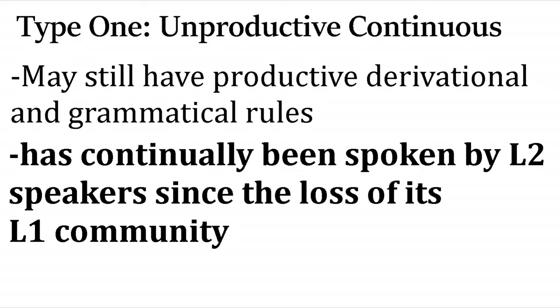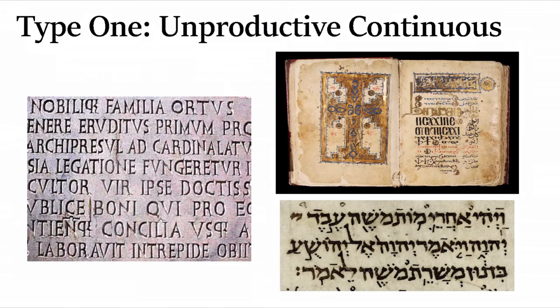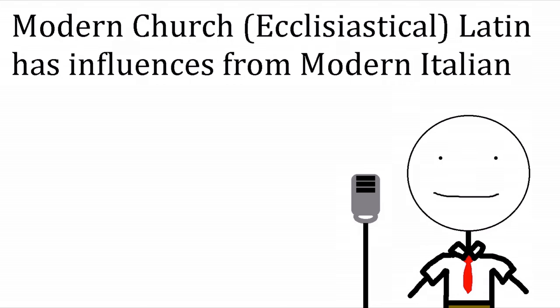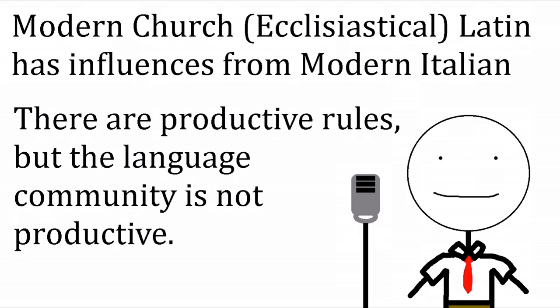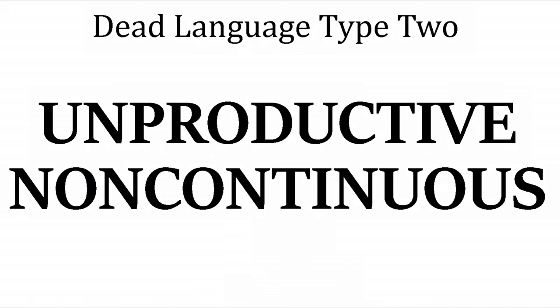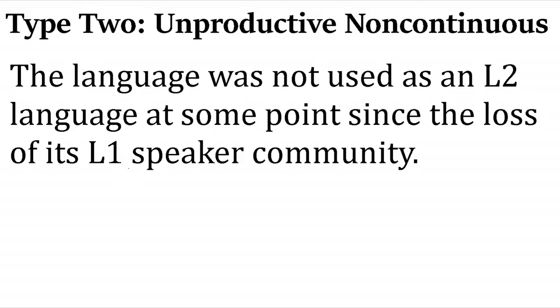An 'unproductive continuous' language may still have productive rules, because 'continuous' signifies there has been consistent L2 usage since the point it stopped being used as a native language. Examples are Latin, Coptic, and formerly Hebrew, all used for administrative and/or liturgical purposes since the loss of an L1 speaker community. Modern Church Latin has taken on influences from Italian, so there may still be productive grammatical rules — but the speech community itself is unproductive. 'Unproductive non-continuous' is the same thing, just without L2 usage following the loss of its L1 community.